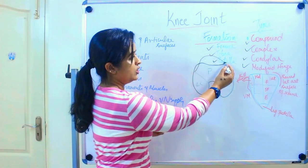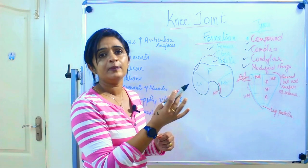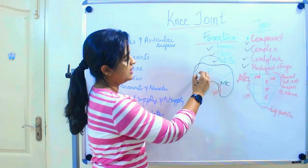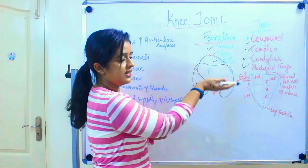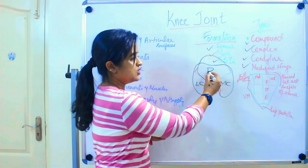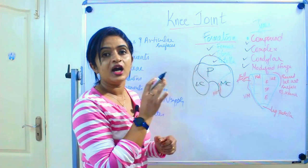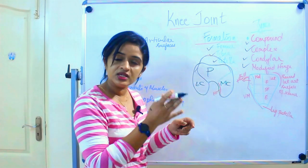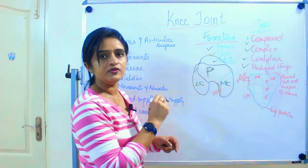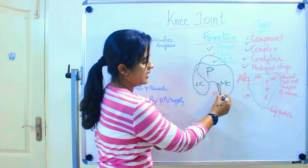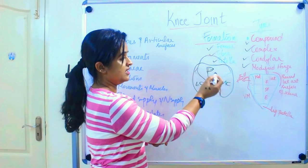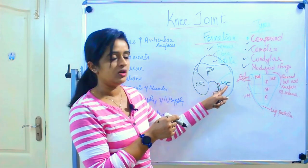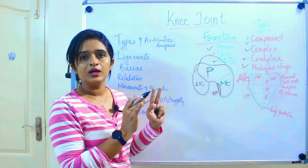Looking at the articular surfaces of the femur, we have the lateral condyle of the femur, the medial condyle of the femur, and on the anterior aspect a trochlear surface extending from the inferior to the anterior surface — this is exclusively for the patella. Along the medial condyle, there is a narrow strip that comes in contact with the patella when the knee is fully flexed.